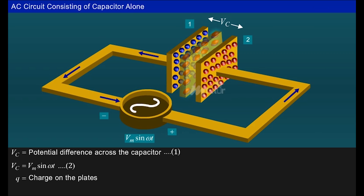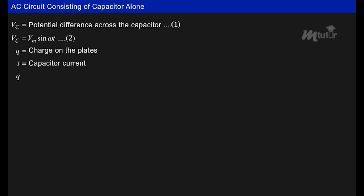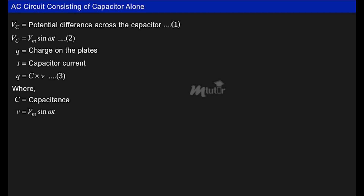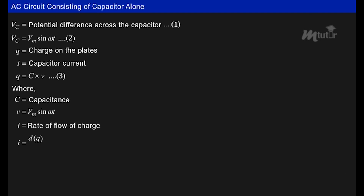The charge on the capacitor plates at that instant is equal to Q. Based on these quantities, let us derive an expression for capacitor current I. We know that Q = CV, where C is the capacitance and V = Vm sin ωt. The current I is the rate of flow of charge, expressed as I = dQ/dt.